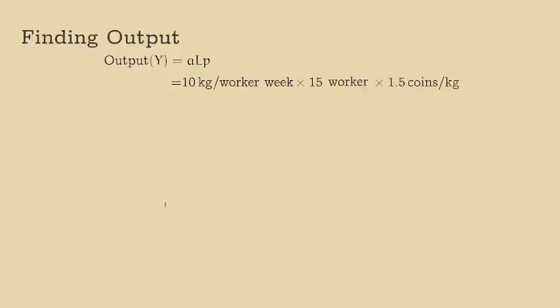To get the total output of the economy in monetary value, we take the average labour productivity, times the number of workers, times the price of each good. So, we say output, Y, is equal to 10 kilograms per week per worker, times 15 workers, times 1.5 coins per kilogram.